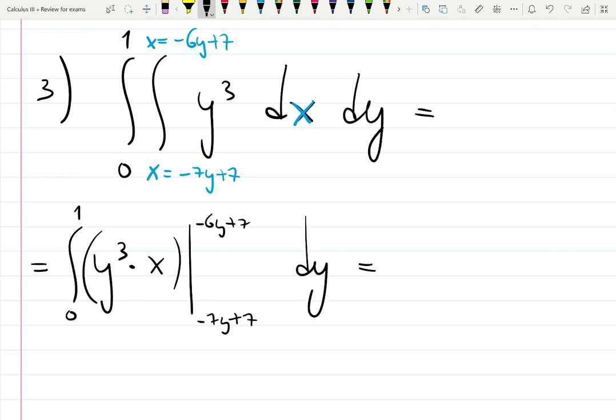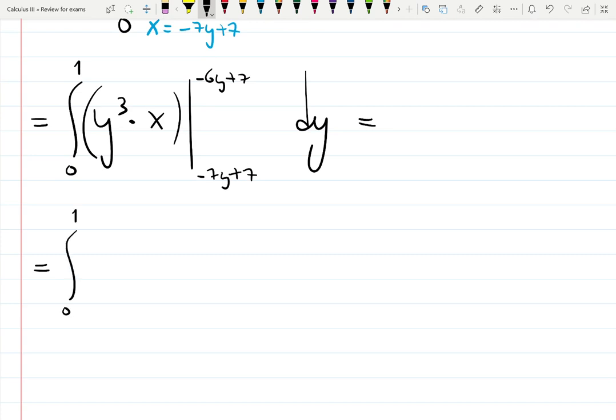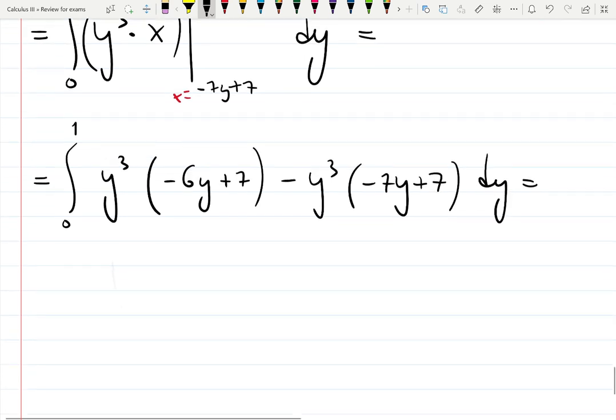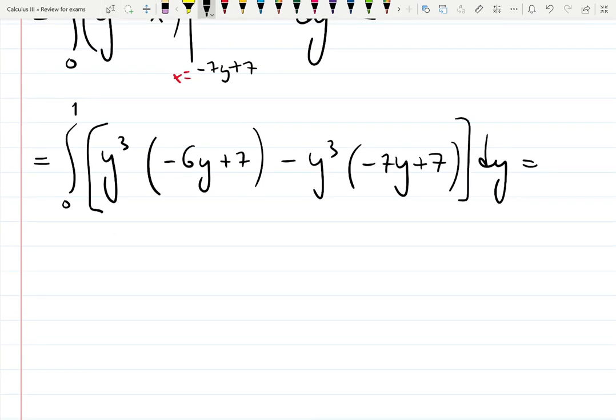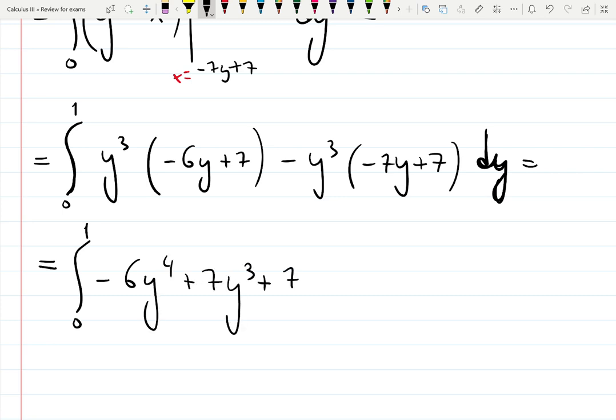Some people don't even put parentheses. Plug everything into y³ times x: it will give me y³(-6y + 7) minus y³(-7y + 7). Actually, I will not factor out. I will keep it like so and distribute: y³ times (-6y + 7) minus (-7y + 7). You don't have to put parentheses for dy. Distributing: -6y⁴ + 7y³ + 7y⁴ - 7y³ dy.